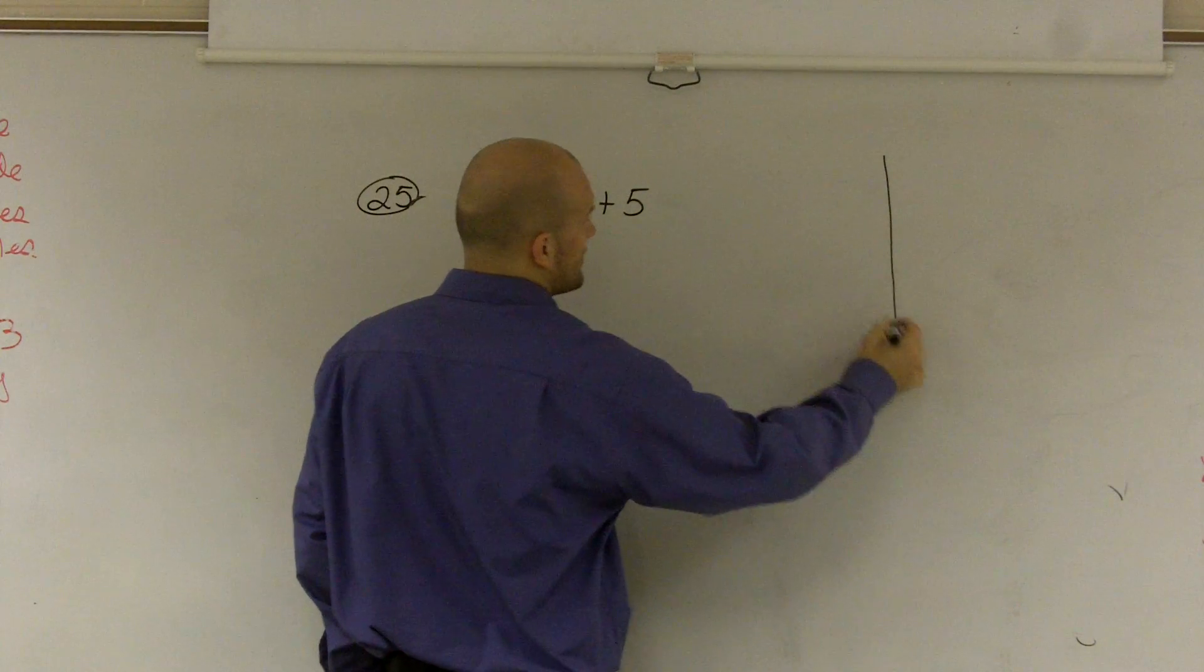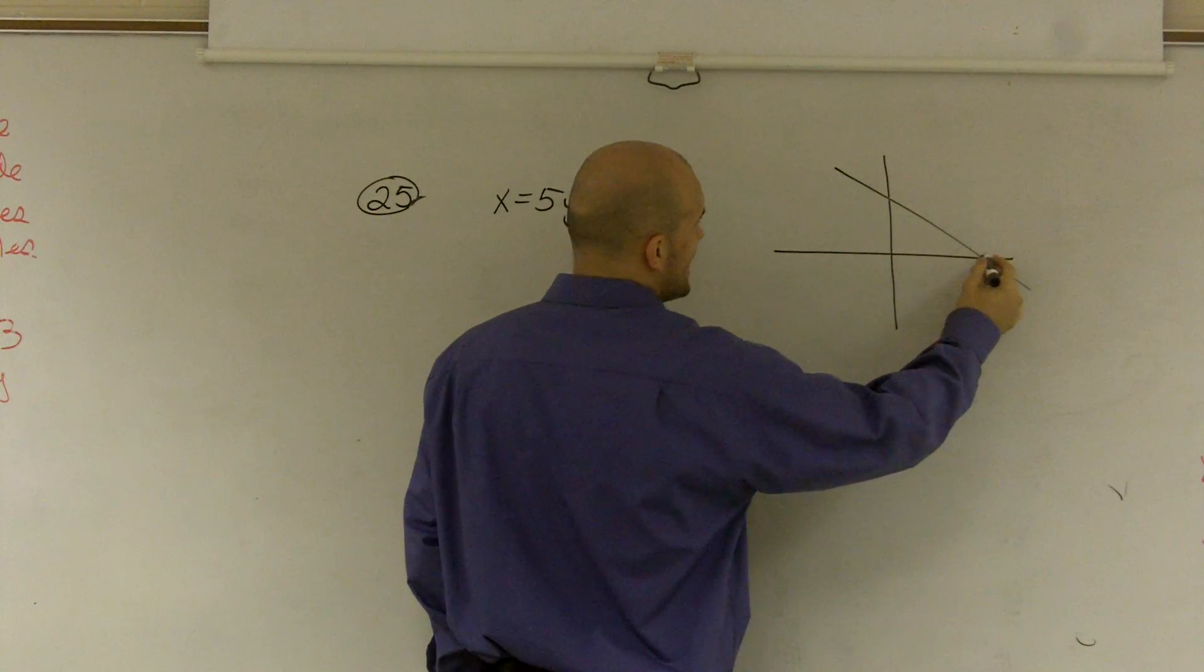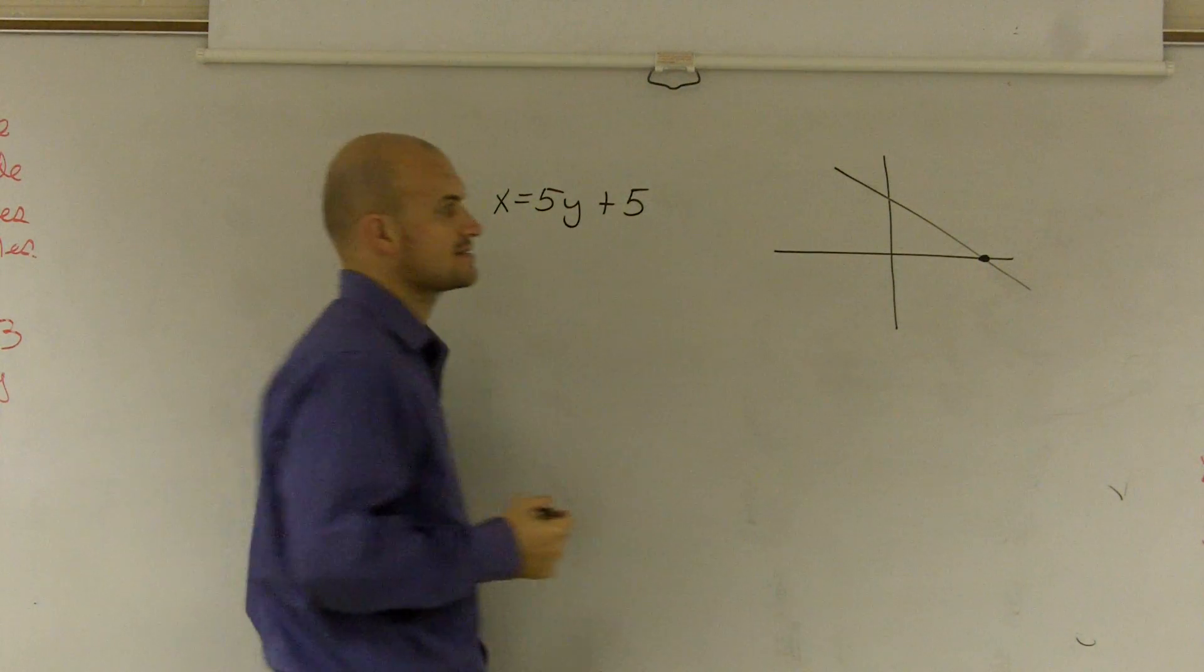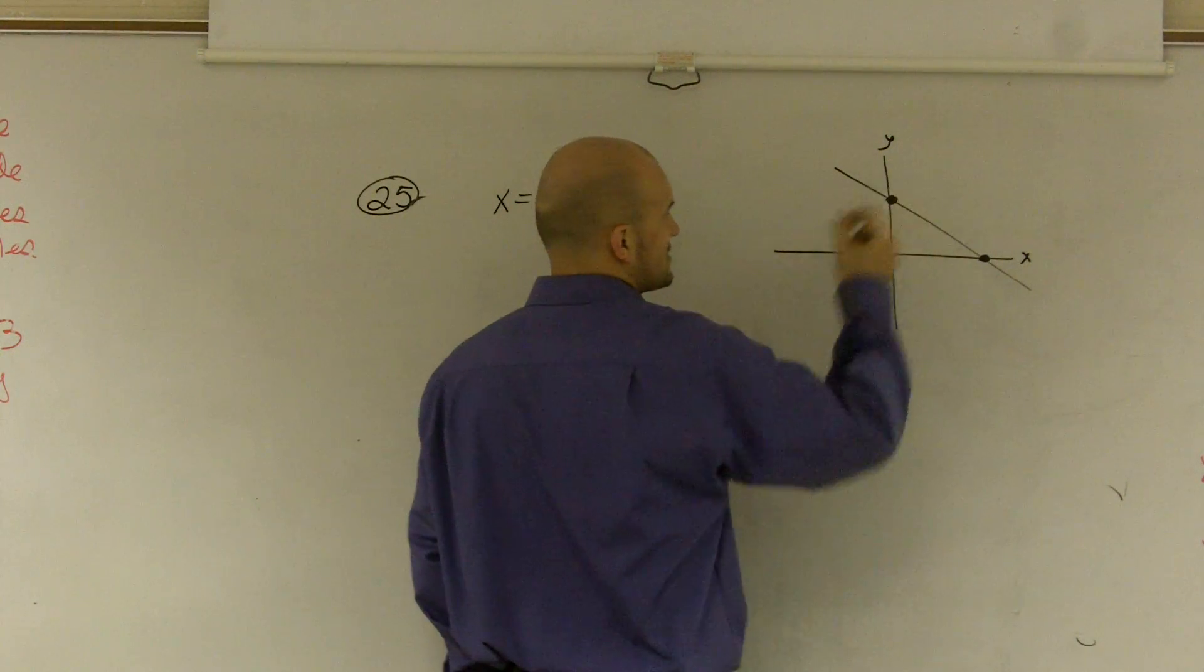The x and y-intercepts are when we have a graph. The x-intercept is where the graph crosses the x-axis, and the y-intercept is where the graph crosses the y-axis.